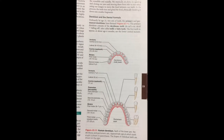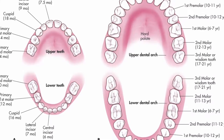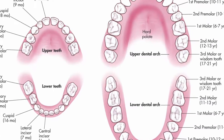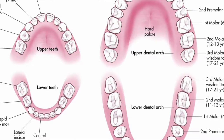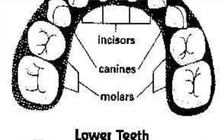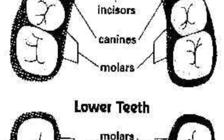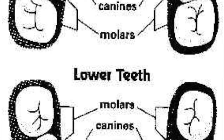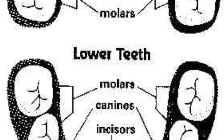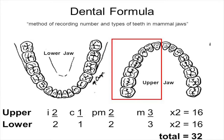You have permanent and deciduous teeth — deciduous teeth is another way of saying baby teeth. In total, you have 32 permanent teeth: incisors which cut your food, canines which tear and pierce your food, premolars which is another word for bicuspids, and molars which grind and crush your food. The formula for your teeth is 2I, 1C, 2PM, 3M times 2 — meaning 2 incisors, 1 canine, 2 premolars, and 3 molars, times 2, for the total amount of adult teeth.